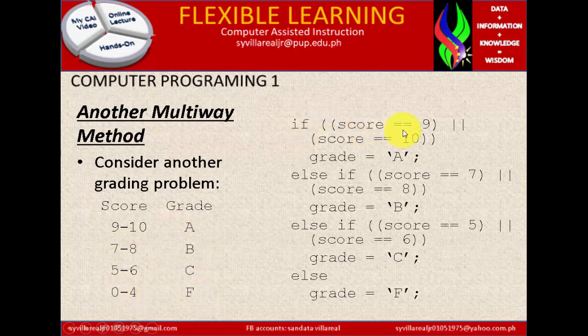If score is exactly equal to 9, or score is exactly equal to 10, then grade is equal to A. It uses or statement. It means to say, if you are 9, then it is A. If you are 10, then it is A, because it is or.